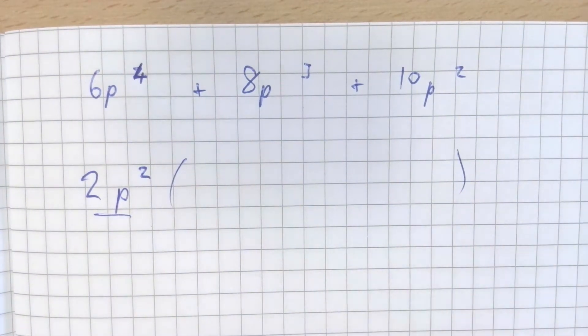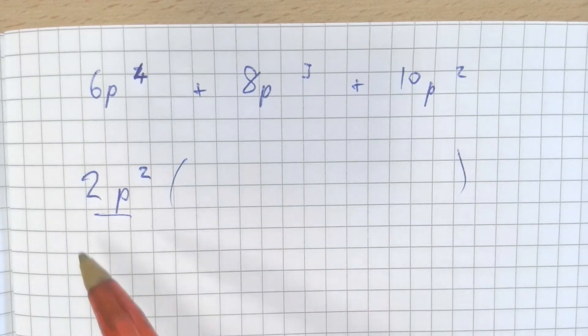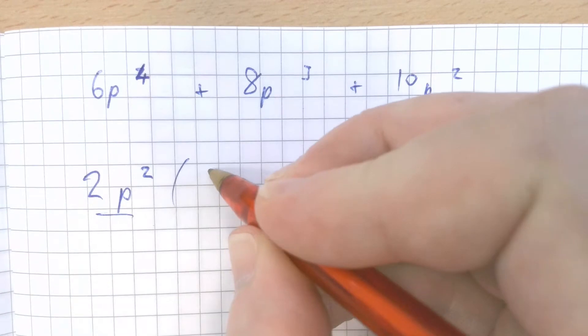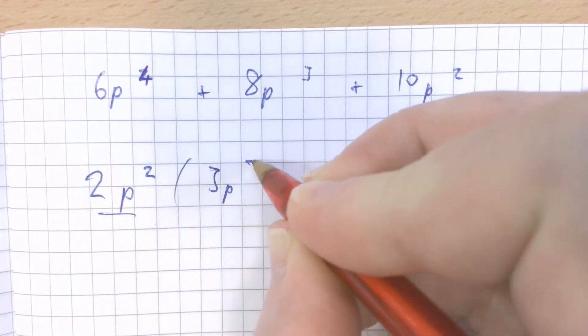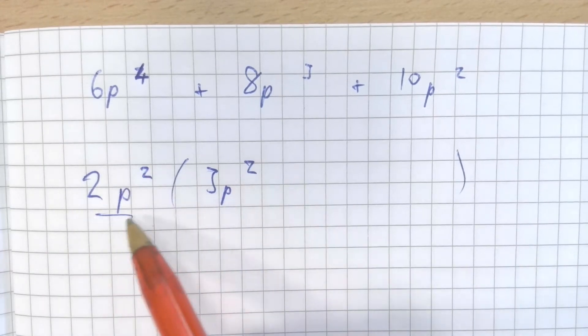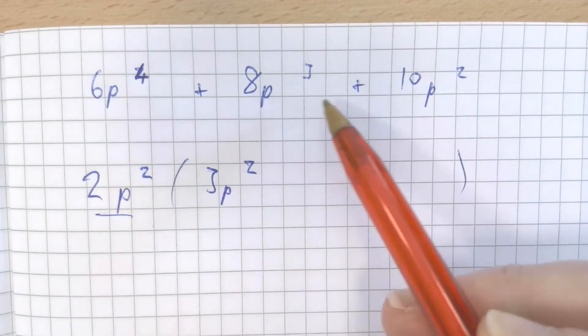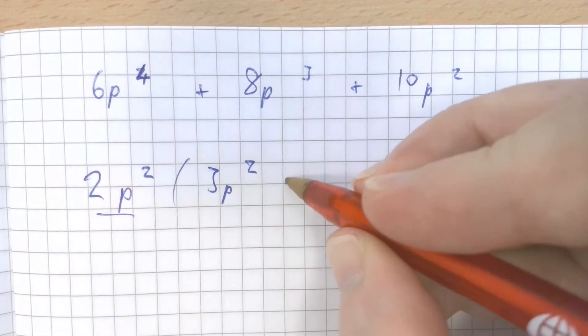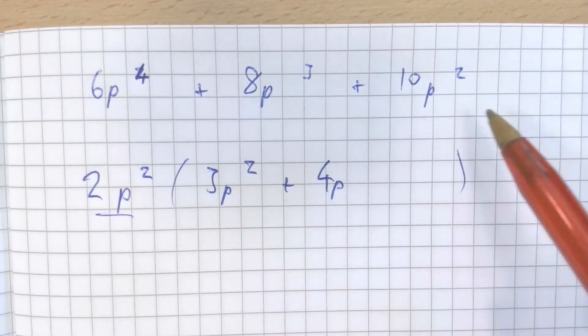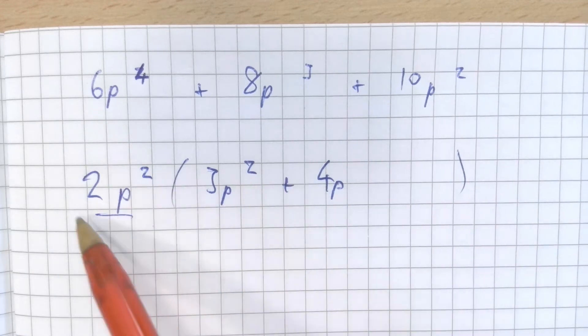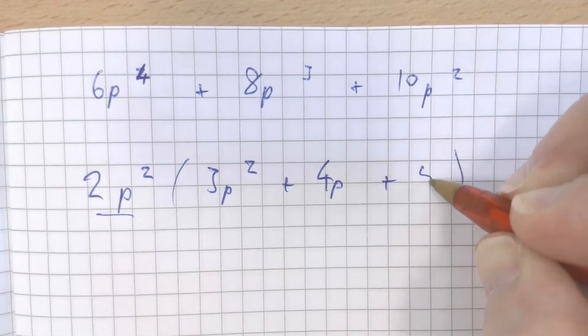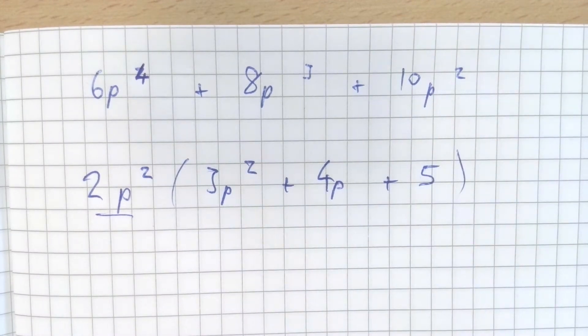And then we ask ourselves the question, what do I times 2p squared by to make 6p to the 4? That is 3p squared. And for the next term, what do I times 2p squared by to make 8p cubed? You should see that that's 4p. And then at the end here, what do I times 2p squared by to make 10p squared? Well, the answer to that is 5.